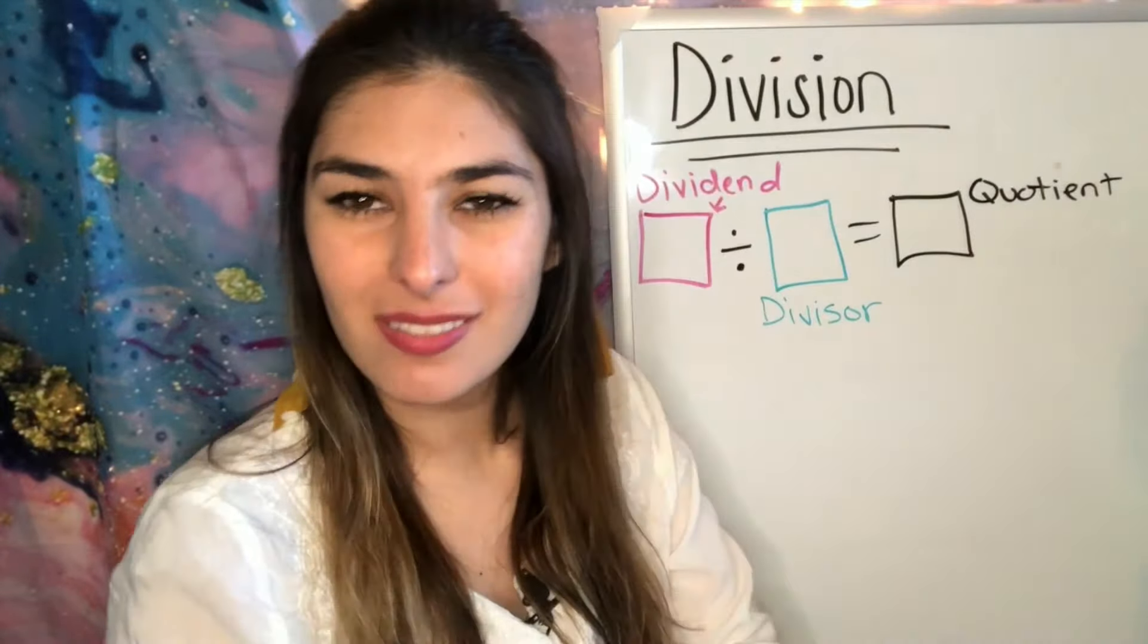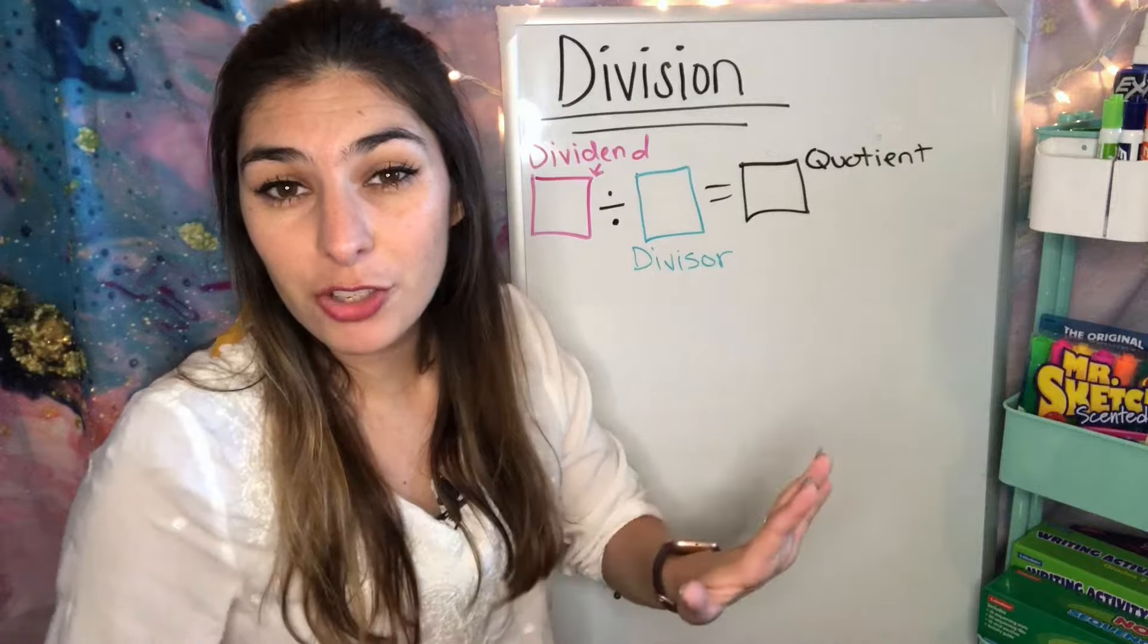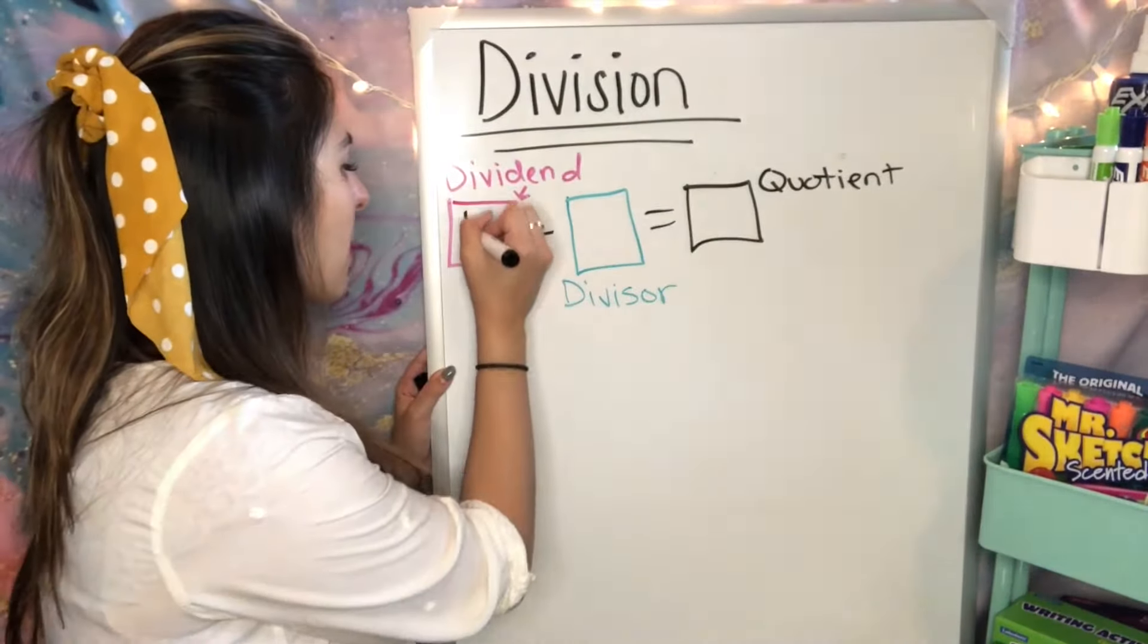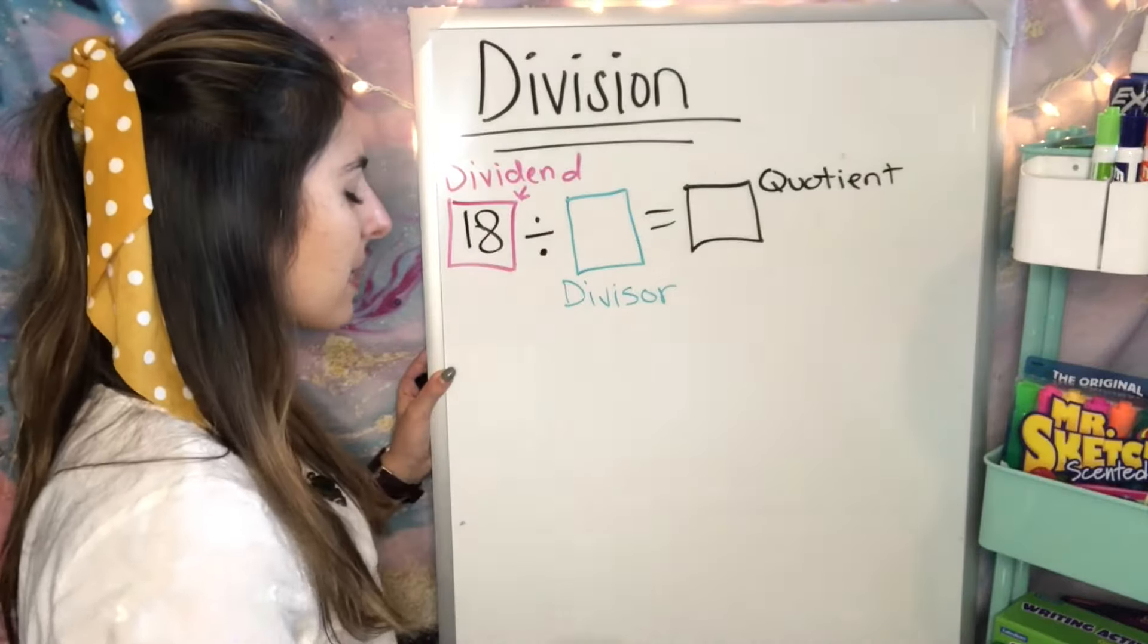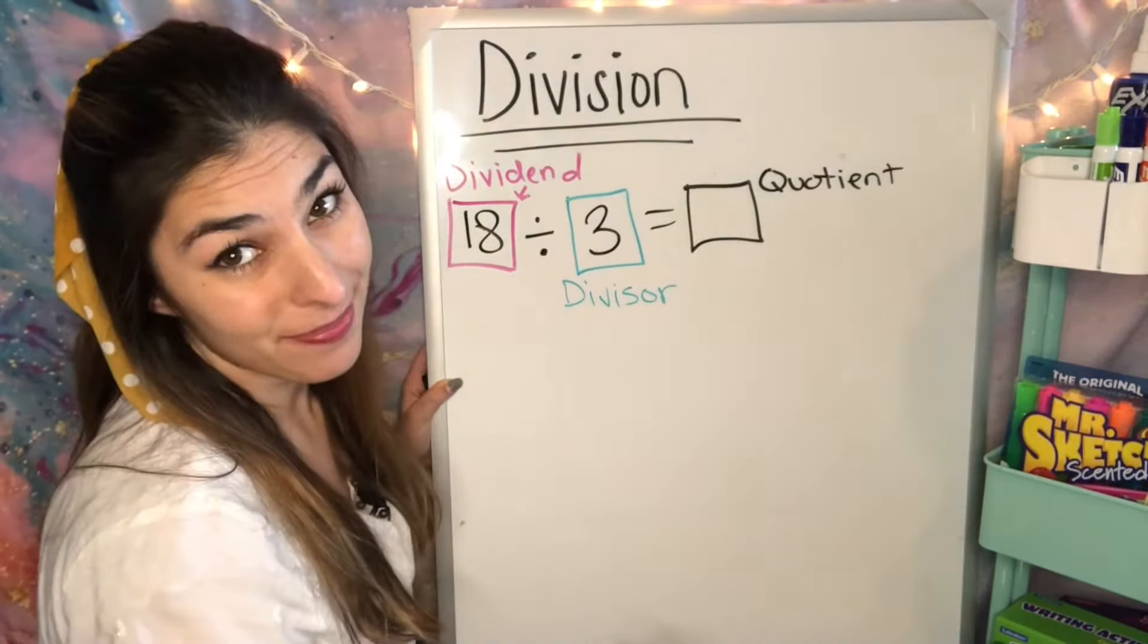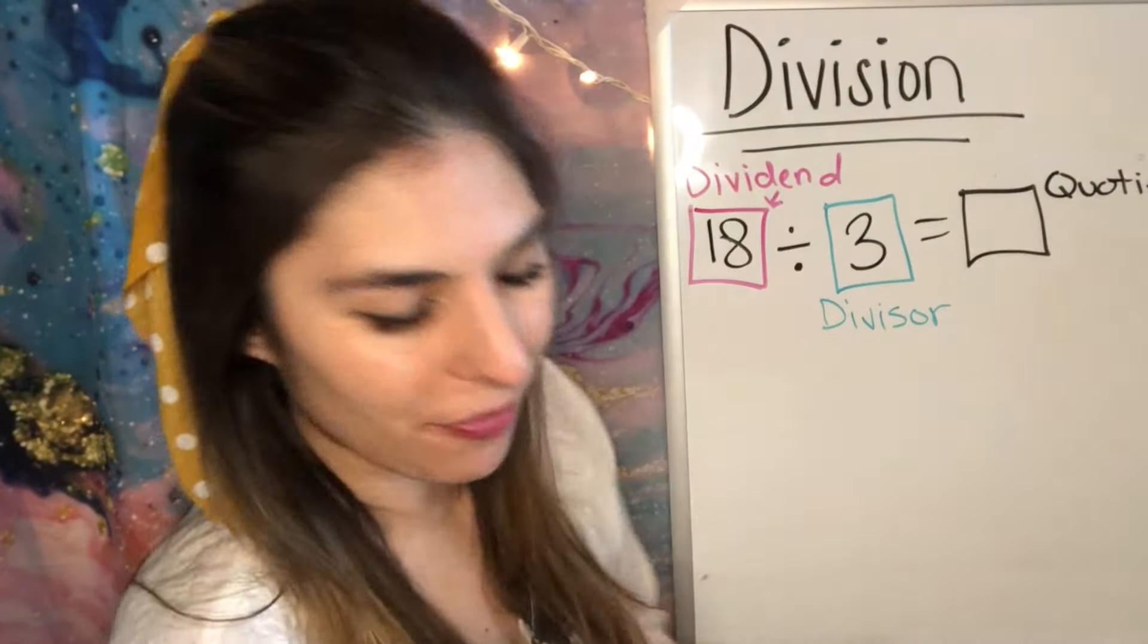Let's dive into the equations. The equation that we're going to be using today throughout all of our strategies is 18 divided by 3. So our dividend is going to be 18, that's our big number. Divisor, we're going to be dividing by 3. And our answer, well, we'll get there. Let's solve it by the first one.